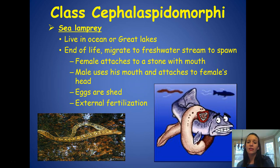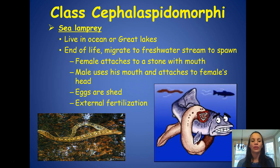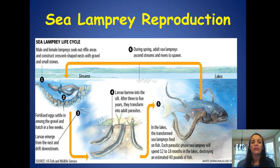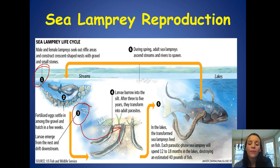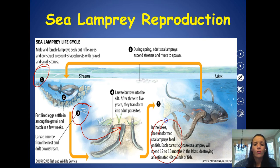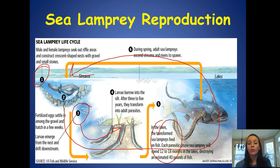In reproduction, the female sea lamprey attaches to a stone with her mouth, and the male attaches to the female's head. Eggs are shed and fertilized externally. The life cycle shown in the infographic: they seek out areas and attach, eggs settle, larvae emerge and drift downstream into silt, and after three to five years they transform. In spring, adults migrate back up streams and rivers to spawn, completing a cycle from stream to lake and back to stream.